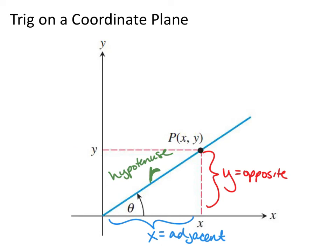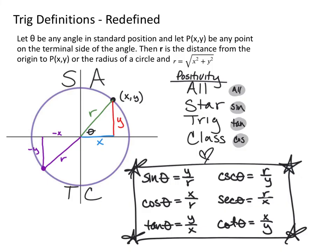Now we'll take the trigonometry we learned — opposite over adjacent and all those ratios — and put them on a coordinate plane. On the coordinate plane, we can create coordinates in a circular motion that let us define trig in terms of x, y, and the radius r. The opposite side becomes the y distance, the adjacent side becomes x, and the hypotenuse is the radius of the circle since it stays constant as you go around.